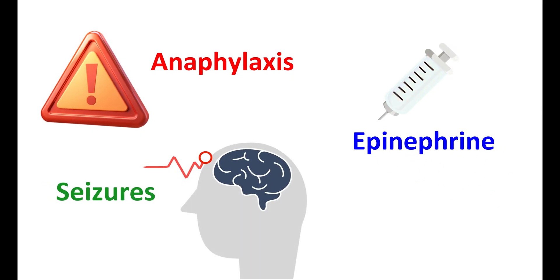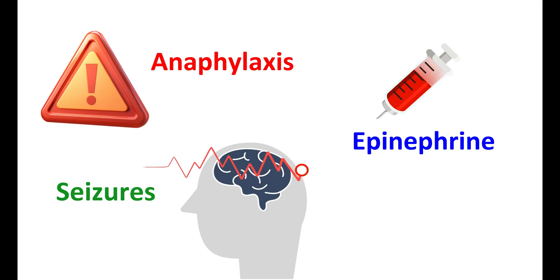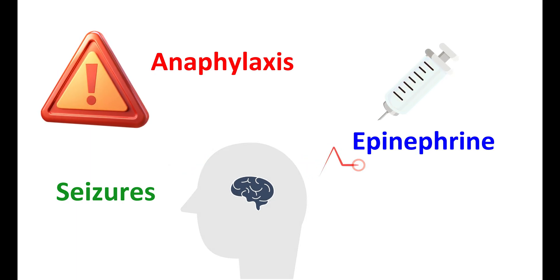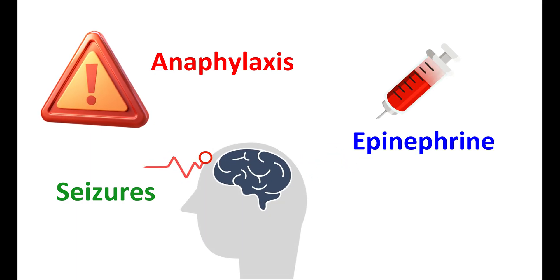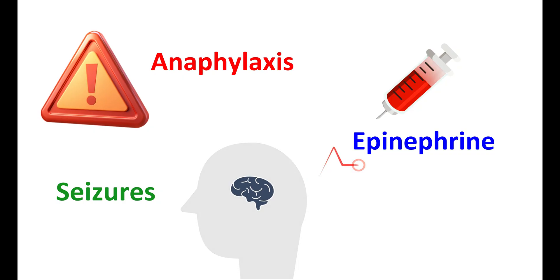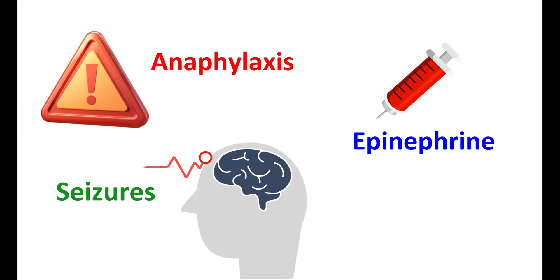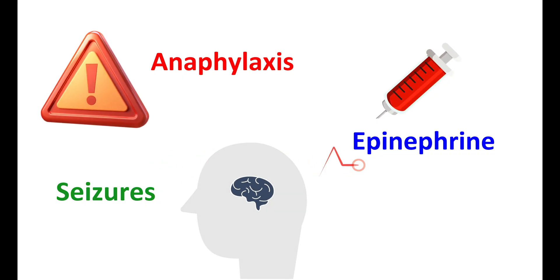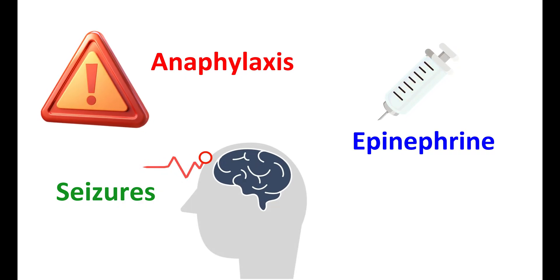Seizures may be observed at higher doses of amoxicillin or in people with renal failure using amoxicillin without dosage adjustment. Even though rare, it may produce Stevens-Johnson syndrome, which affects skin and soft tissues. Rarely, it can also produce interstitial nephritis.